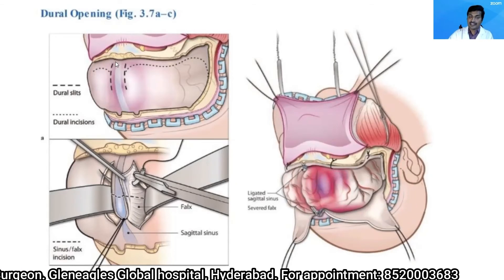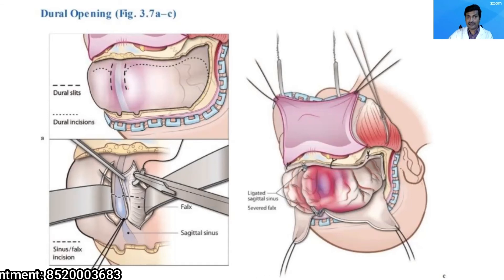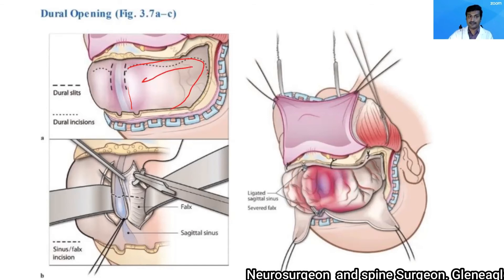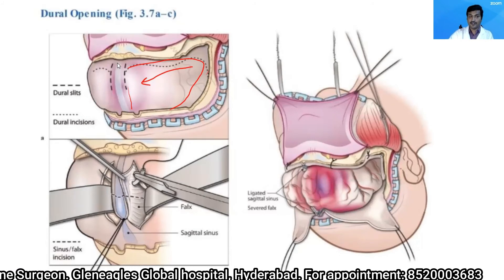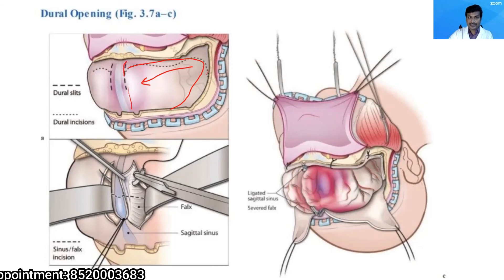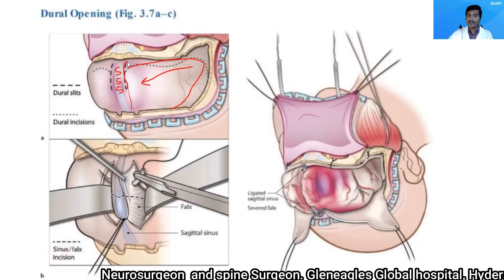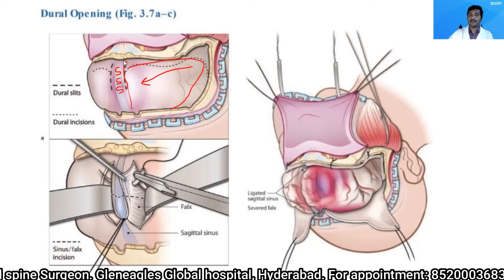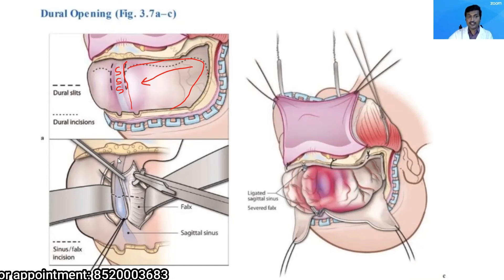Now open the dura mater. If there is no intention to cut the superior sagittal sinus, open dural flaps on either side with the base on the midline. However, cutting and releasing the superior sagittal sinus anteriorly will decompress the frontal lobe. To do this, take dural slits on either side of the superior sagittal sinus, as low as possible near the crista galli.